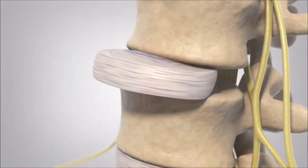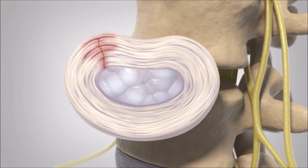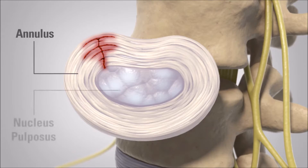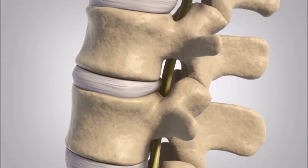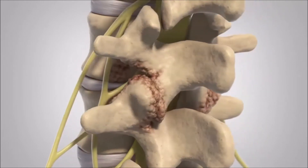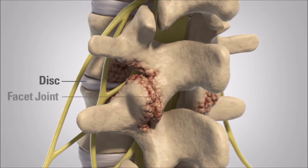Over a period of time, as we age, these discs may become dry. Normally the discs are supposed to be hydrated and have a lot of water content. Over time they may become dry and develop cracks, which can be a source of pain. These cracks and degeneration of the disc eventually lead to the disc not functioning like it is normally supposed to, adding more stress on the supporting structures of the spine — the joints in the back as well as the muscles — which may lead to chronic low back pain.